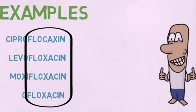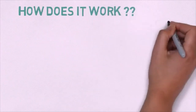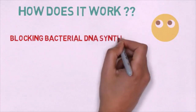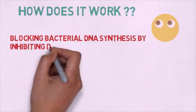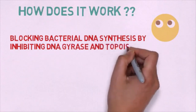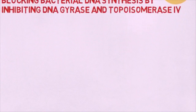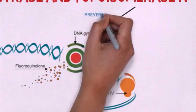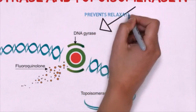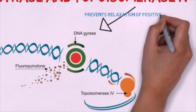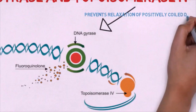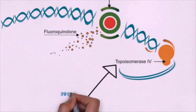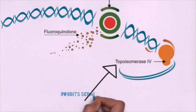The mode of action of fluoroquinolones is by blocking bacterial DNA synthesis through inhibiting DNA gyrase and topoisomerase enzymes. If DNA synthesis is inhibited, proteins will not be made. Inhibiting DNA gyrase prevents relaxation of positively coiled DNA. Topoisomerase inhibition prevents separation and replication, ultimately leading to bacterial cell death.